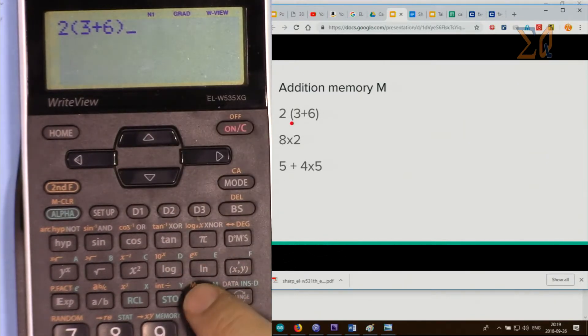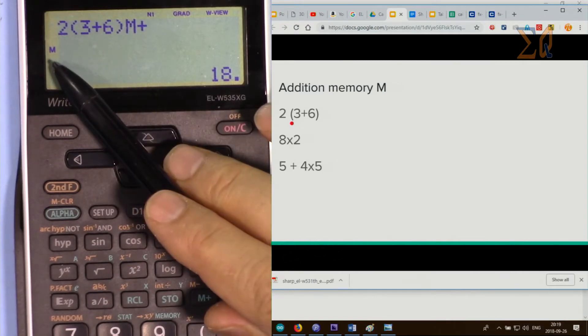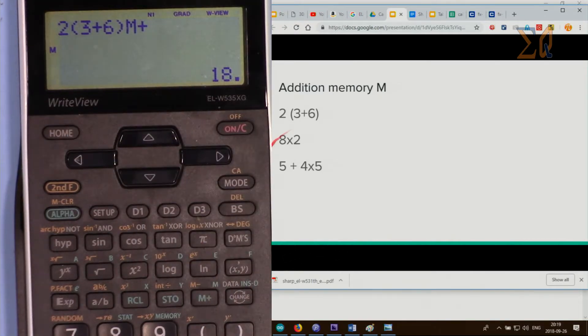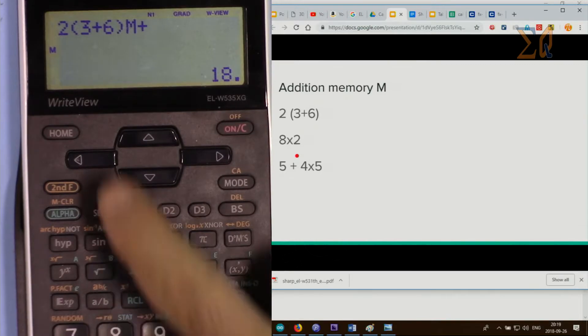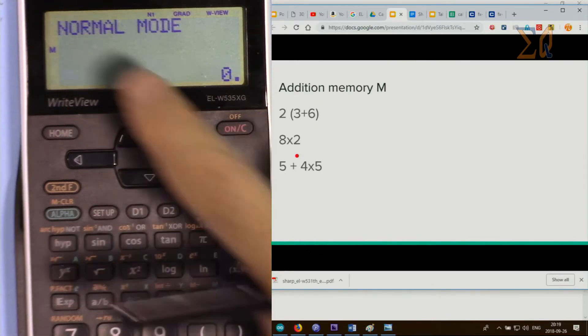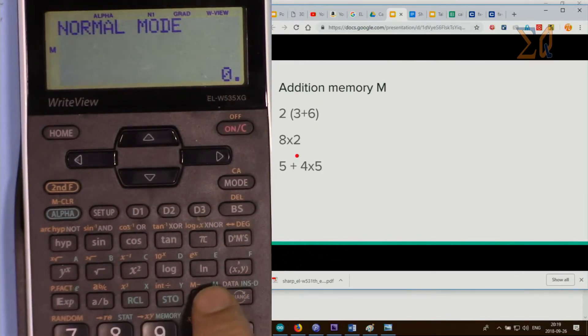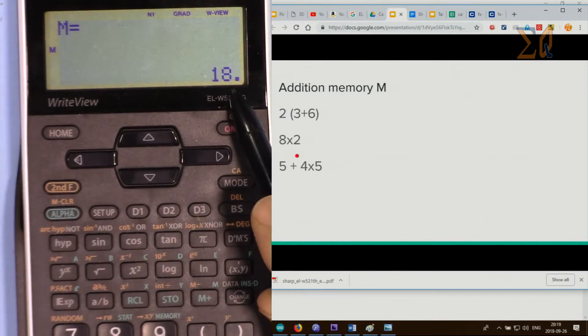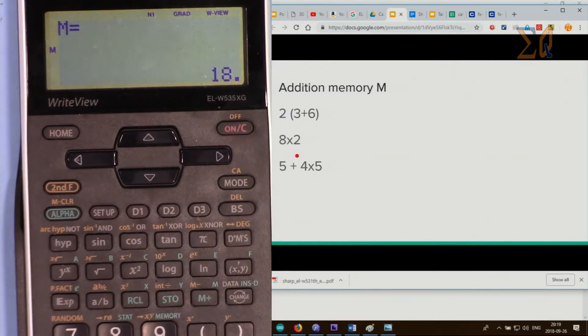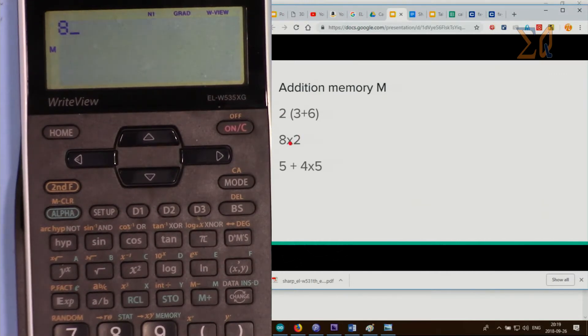If you want to just recall it, recall and then M—that's 18, the result of this. So 8 times 2, and then plus M. And then 5 plus 4 times 5, and then plus. When you press this, it just stores it.